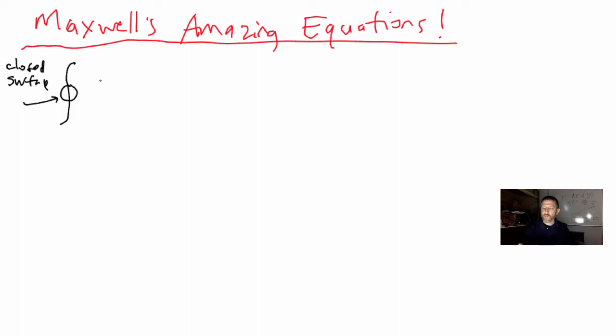So this means for Gauss's law, closed surface, it's E, the E field, dotted on dA vector equals, anybody remember this? Q_in over epsilon naught. Q_in over epsilon naught. That's Gauss's law. That is number one.